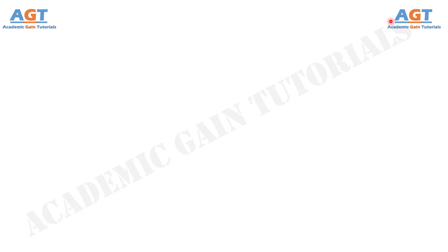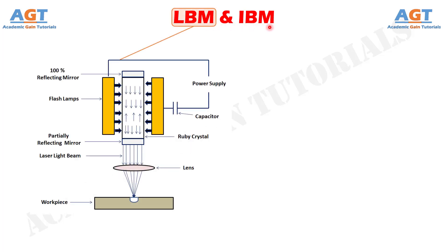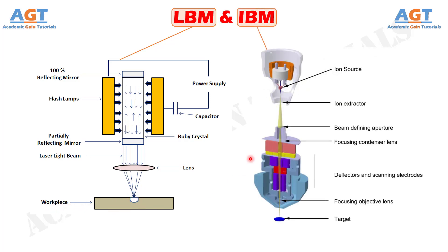Welcome to Academic Game Tutorials. In this video, we will look into the differences between laser beam machining and ion beam machining. Laser beam machining is one thermal energy based non-traditional machining process where a concentrated and coherent beam of photons, or laser, is used to supply thermal energy, or heat, for selectively removing material from the workpiece. Ion beam machining is another non-traditional machining process, but here material removal occurs due to mechanical impact.